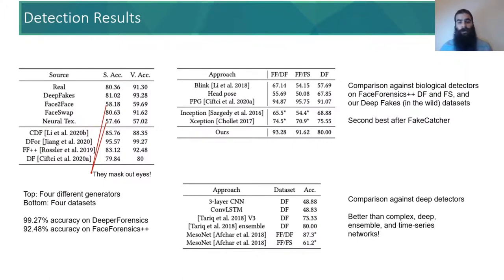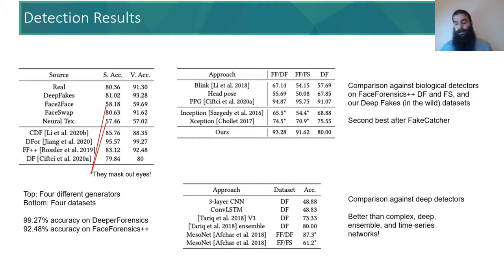Our eye-gaze-based deepfake detection algorithm achieves 99.27% accuracy on the DeeperForensics dataset and 92.48% accuracy on the FaceForensics++ dataset. We note that if a deepfake generator carves out the eyes, our approach behaves like a random guess, as reflected in our face-swap accuracy. We compare our results against 11 different fake detectors utilizing either complex deep neural networks or other biological features, and we observe that our approach outperforms almost all of them.